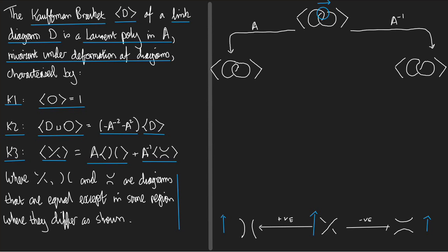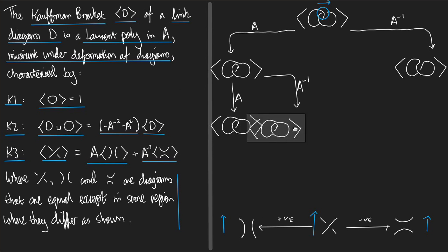Now we can apply the relation to this Kauffman Bracket on the left. It tells us we're going to get A times something plus A inverse times something else. I'm going to apply the relation at this crossing. Which way is up at the crossing? It's still this way. So the positive smoothing — the one I multiply by A — is this, and the negative smoothing — the one I multiply by A inverse — is this. Let's do the same thing on the other side: A times something, A inverse times something else.